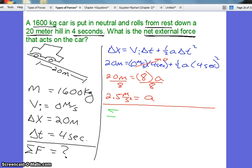So we have sigma f is mass times acceleration, which is 1,600 kilograms times 2 and a half meters per second squared. And so we get our net external force. It comes out to be 4,000 newtons. And that's our answer.